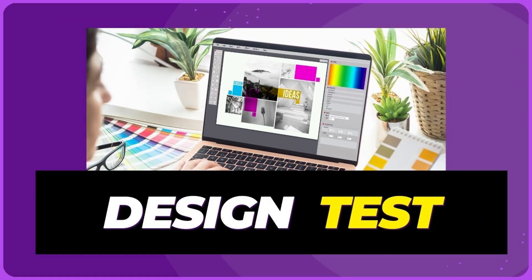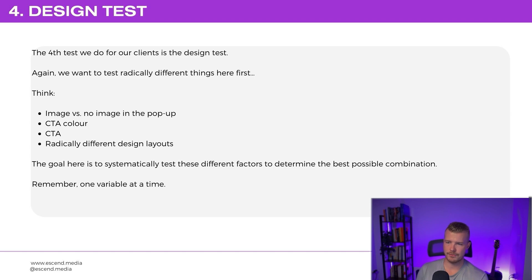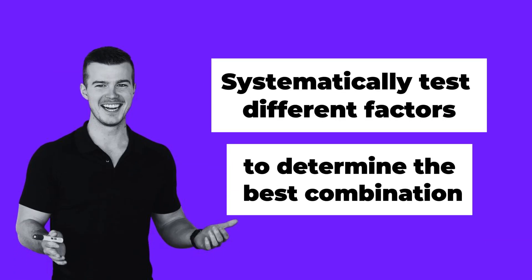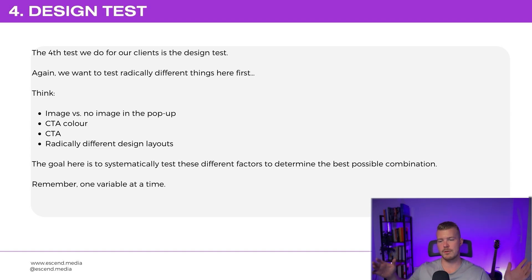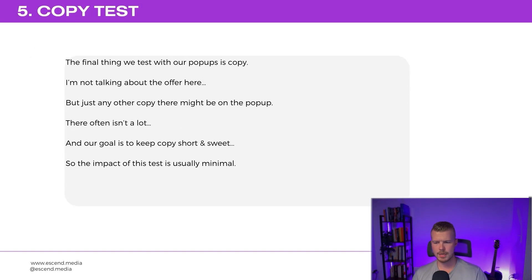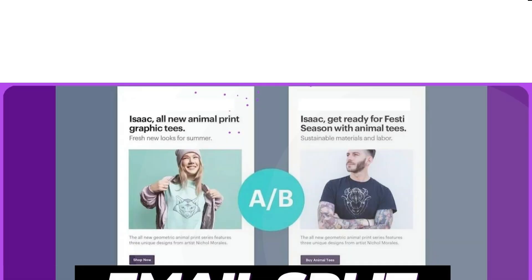For design, we want to test radically different things: image versus no image, CTA color, the call-to-action itself, and radically different layout designs. We systematically test different factors to determine the best combination — we don't change everything at once, because then we won't know which variable had the impact. Copy is the last thing we test; we recommend as little copy as possible in the pop-up so people don't get distracted.